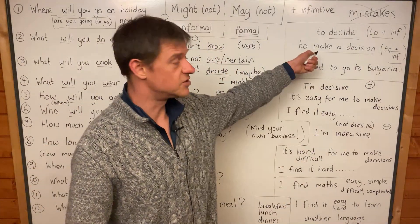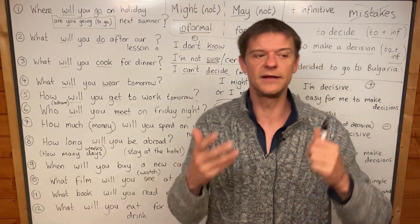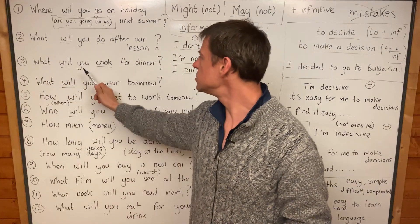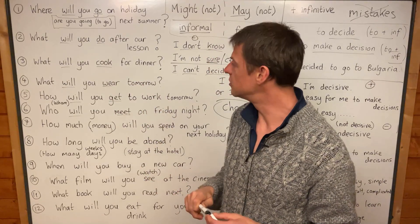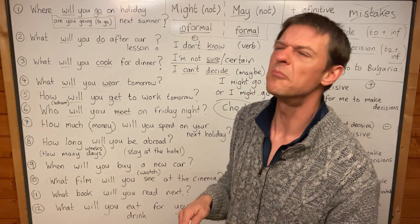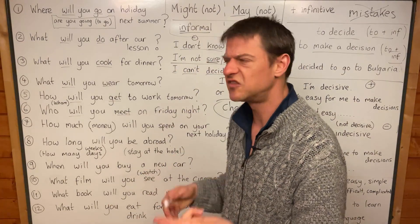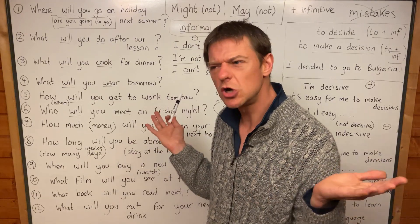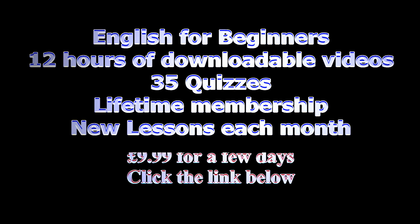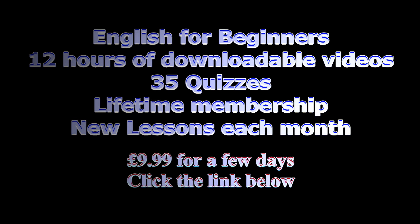Then make a decision. I will read a book. I will check an essay. Number three: what will you cook for dinner? I might cook spaghetti bolognese or I might cook sausages and eggs. I'm not sure. But I will decide, I will make a decision. I will eat spaghetti bolognese.